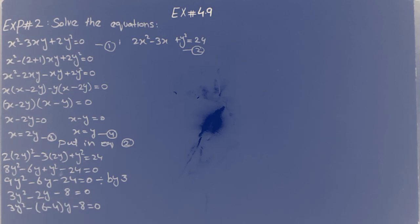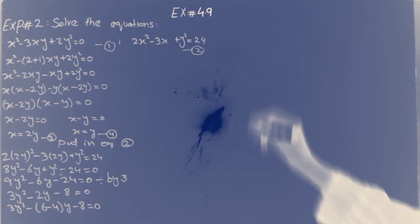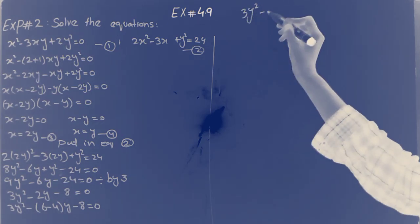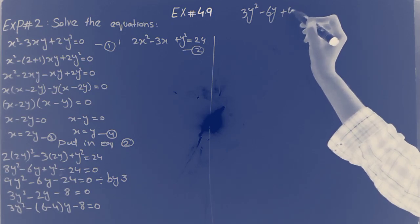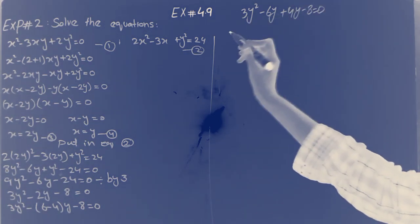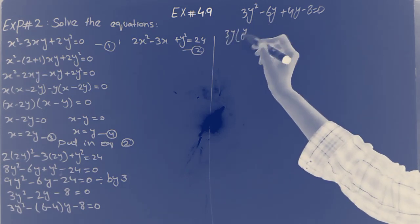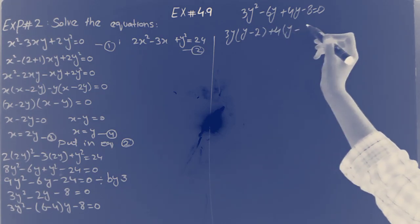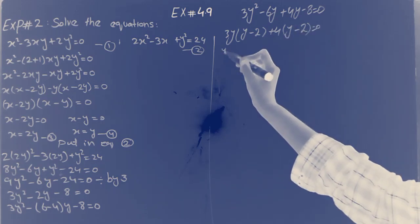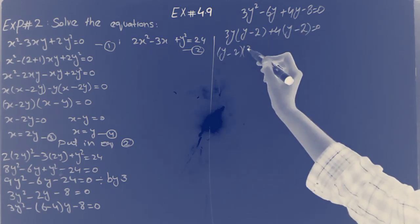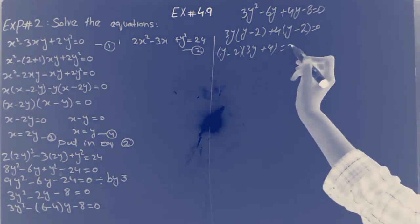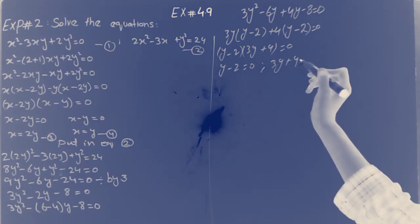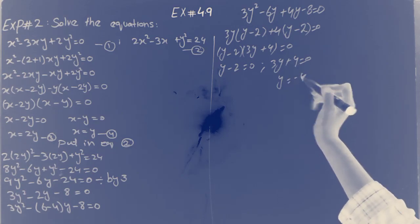Substituting x = 2y into the second equation: (2y)² plus y-square minus 3(2y)(y) plus y-square equal 24. This gives 4y-square minus 6y-square plus y-square equal 24, then minus y-square... Simplifying: 9y-square minus 6y minus 24 equal 0. Dividing by 3: 3y-square minus 2y minus 8 equal 0.